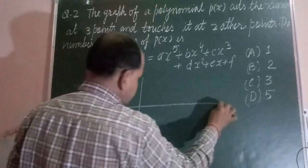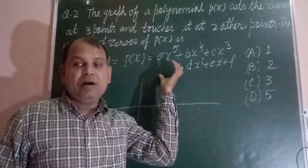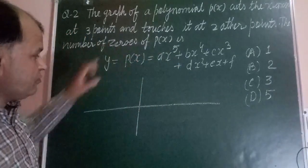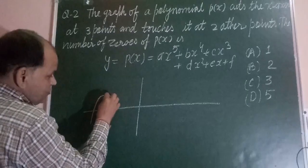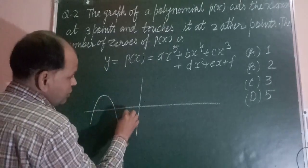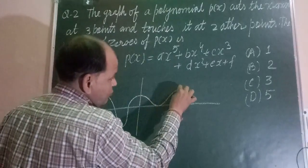So the graph of this polynomial cuts the x-axis at 3 points - at this 1, 2, 3 - and touches at 2 points.